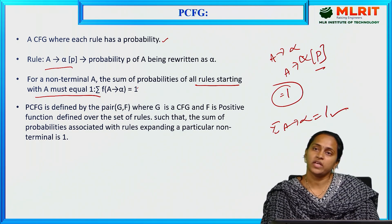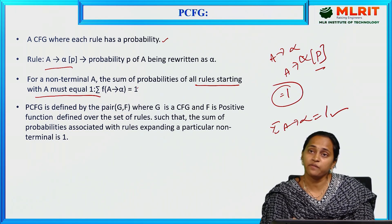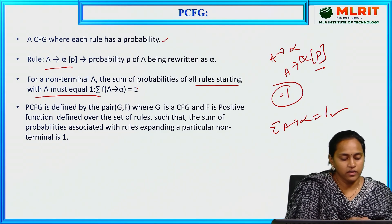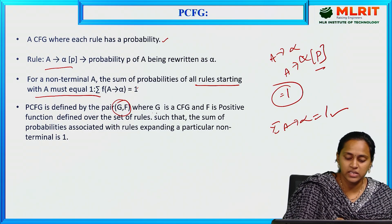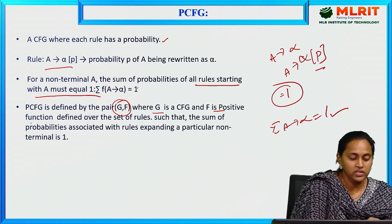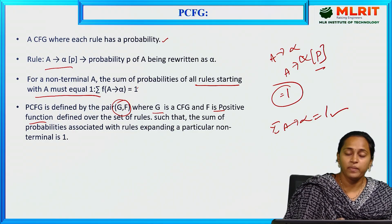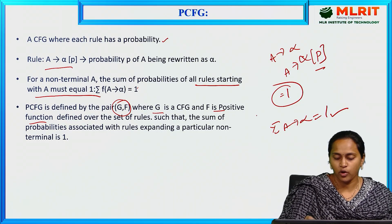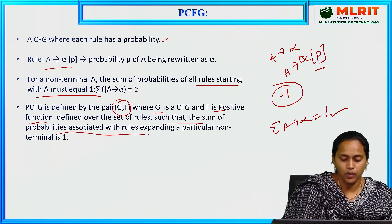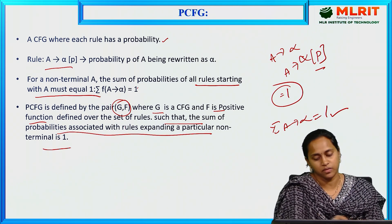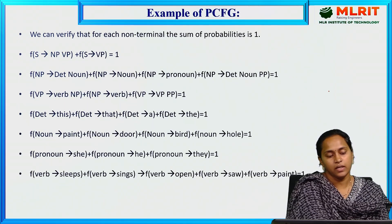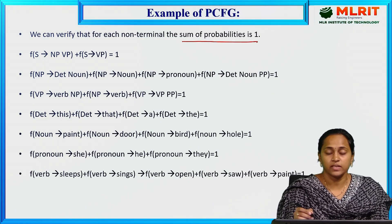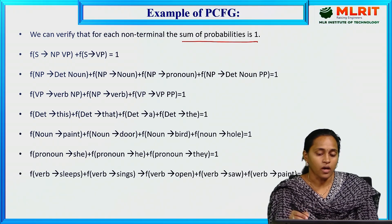Wherever we expand the sentences, the probability of each and every substring must be equivalent to 1. PCFG is defined as a pair (G, S) where G is a context free grammar and F is a positive function defined over the set of rules. Such that the sum of the probabilities associated with the rules expanding a particular non-terminal is 1. We have to satisfy this condition.